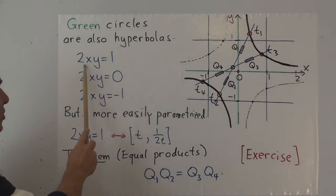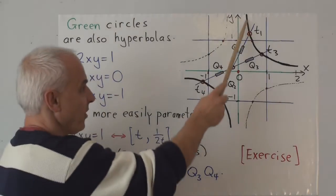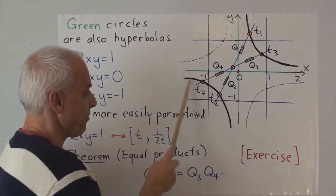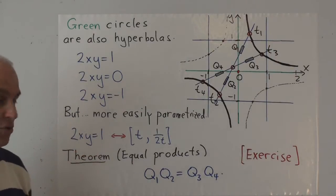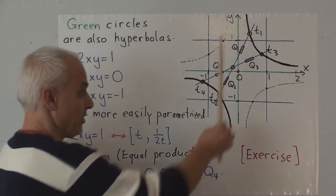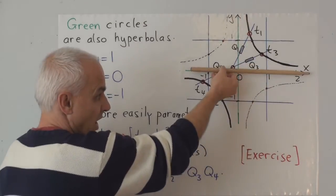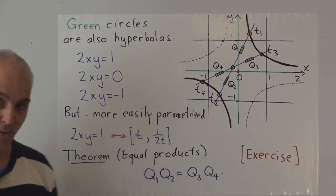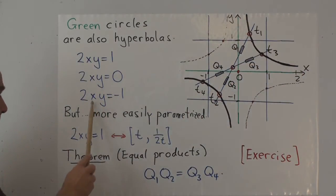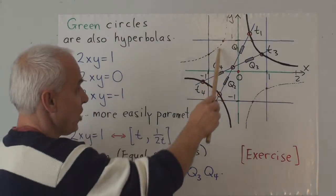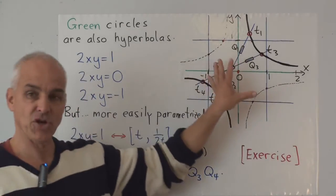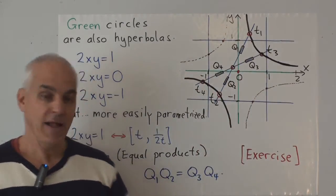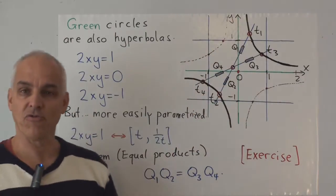So it's simple if we think of the origin as being our center of our circle, in which case the unit circle has equation 2xy equals 1, and that's right here, that branch together with that branch. The null circle has equation 2xy equals 0, which tells us that either x equals 0 or y equals 0. So we are getting the coordinate axes. And then there's this minus unit circle, 2xy equals minus 1, given by the dotted lines here.